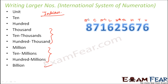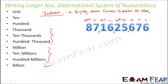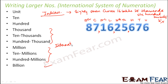If you have to put commas as per the Indian system, you would place them accordingly. The name of this number would be: eighty-seven crores, sixteen lakhs, twenty-five thousand, six hundred seventy-six.